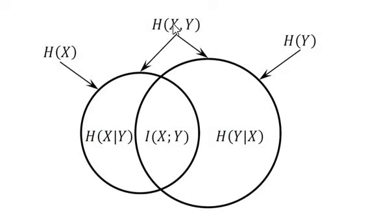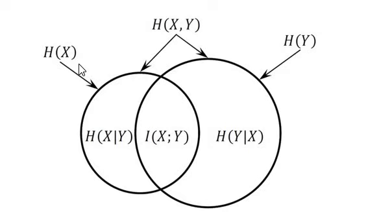So h(x, y) denotes the joint entropy, h(x|y) and h(y|x) denote the conditional entropy, and h(x) denotes the individual entropy. Now let us see the properties of mutual information.